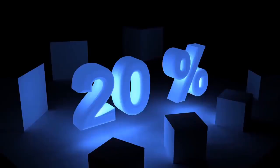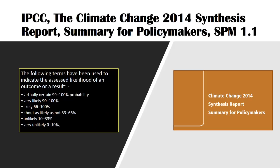Why are these percentages relevant? The IPCC judges the likelihood of an outcome in terms of percentages — for example, it is 'virtually certain' if there is a 99 to 100% probability. It views a probability of between 10 and 33% as being 'unlikely.' And this is the range of correlation between carbon dioxide and global average temperature that the facts have revealed.